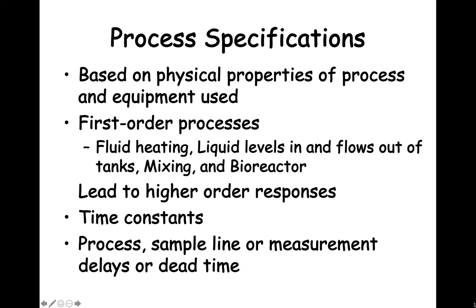Many process control characteristics are based on the physical properties of the process and equipment used. For example, fluid heating performance is different for a typical residential water heater with a 50-gallon tank using on-off control compared to a tankless residential water heating system. Mixing systems will have different responses depending on the tank volume and the material flow rate because they affect the process time constant.